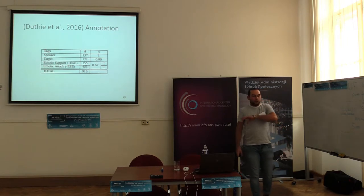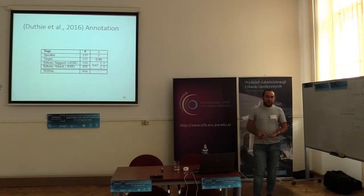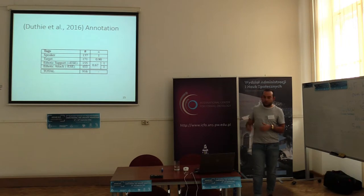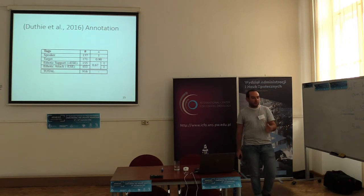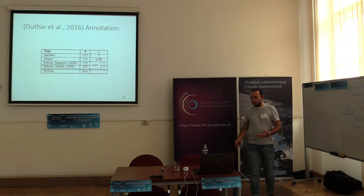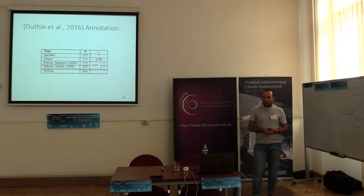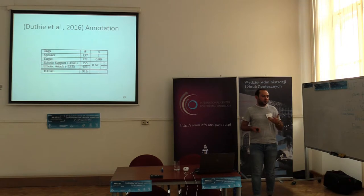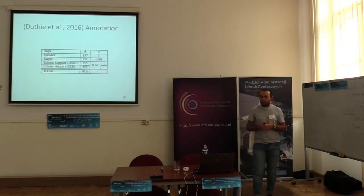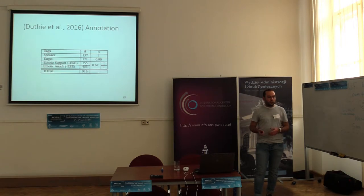We also had a second annotator annotate a 10% subset of the data to validate it. From this, you can see a kappa score of 0.67, which refers to whether a sentence contains Ethos or not. For attack or support classification we had a kappa of essentially 1, because it's quite easy to determine. For speakers there's always going to be 1, as they're always given within the text. And we had 0.9 for determining the target of each sentence.